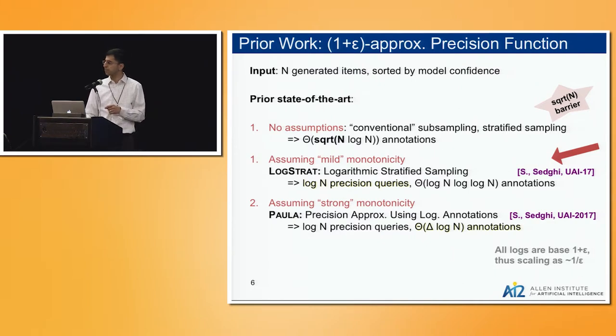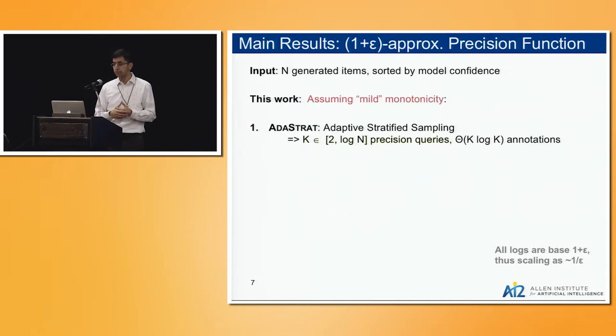What we are going to change is this algorithm was completely data oblivious. You give me not the data at all, but just the number of points you have, the big n, and I'll tell you what to do. It was completely independent of data. The new algorithm for this year is adaptive. You give me n, I give you some points, you give me back some annotations, and then I keep iterating.